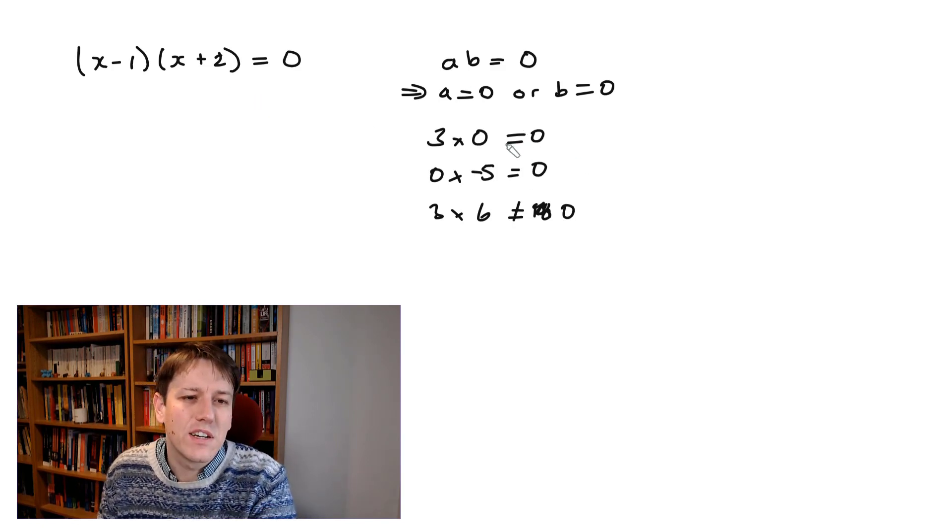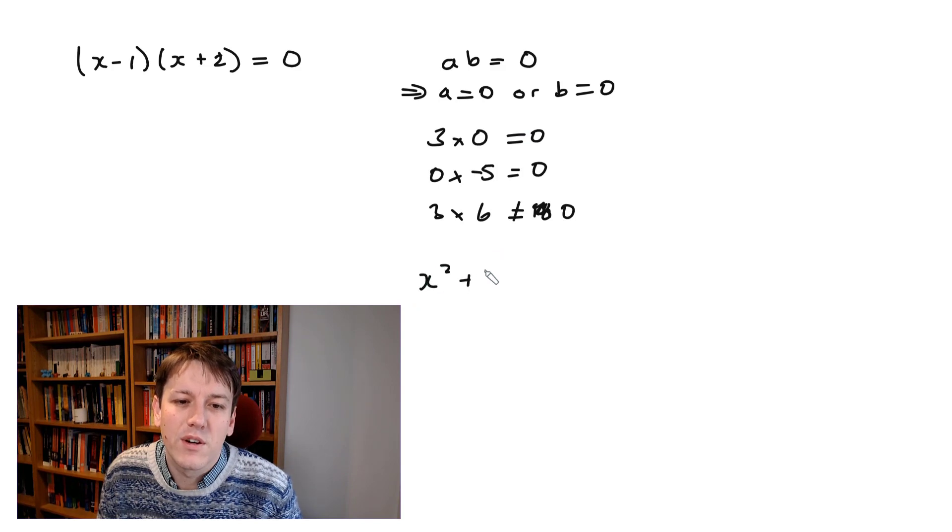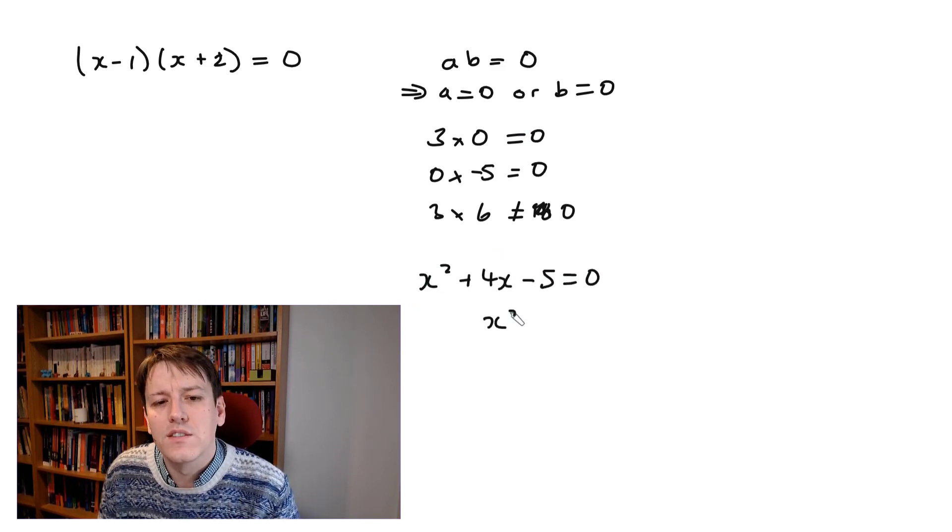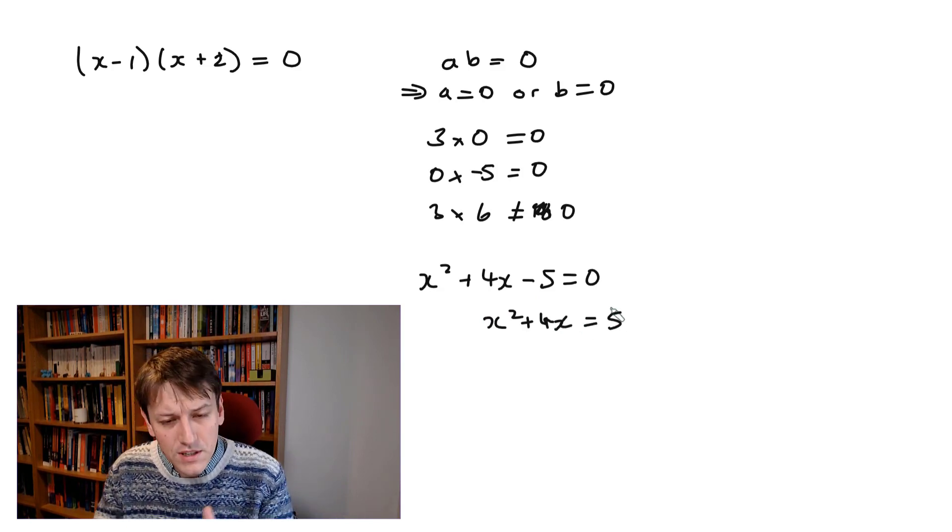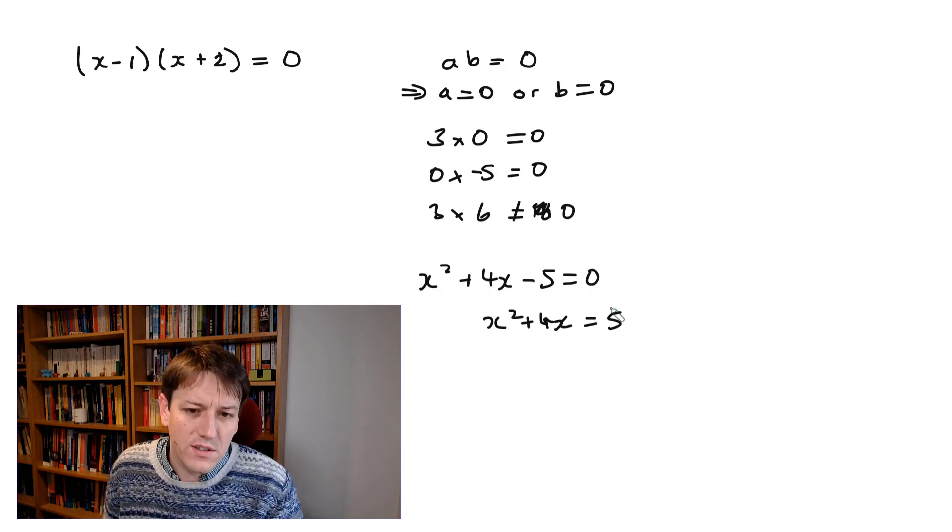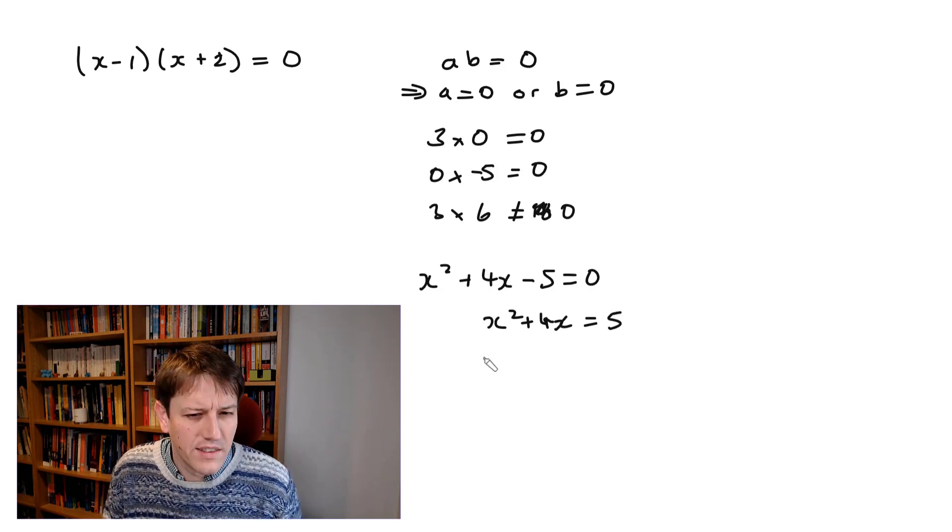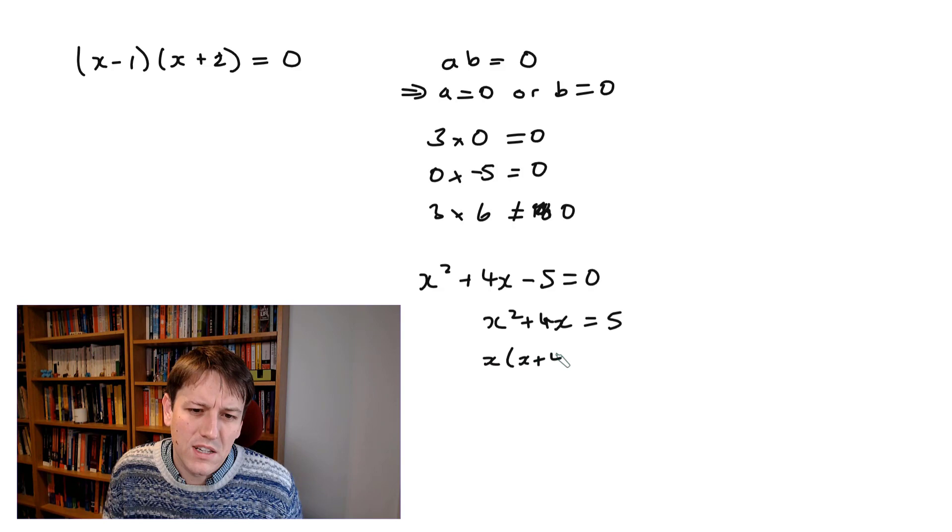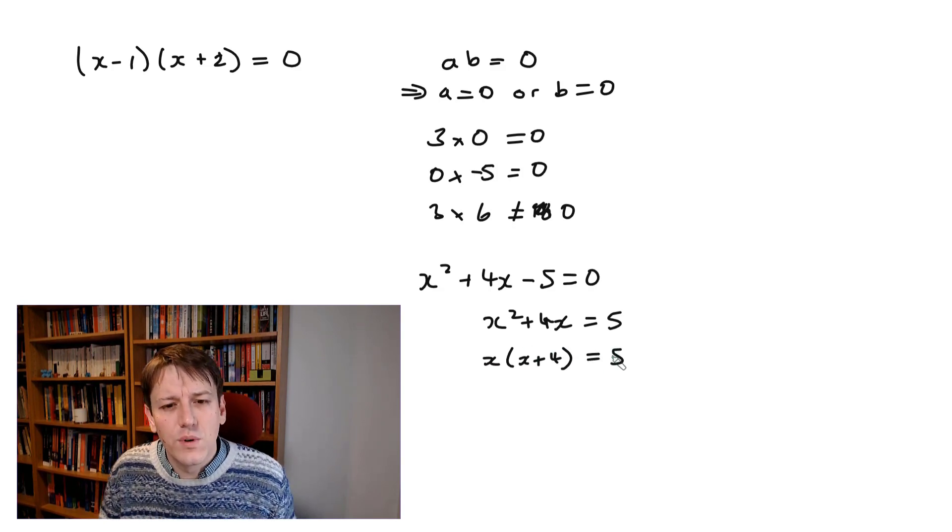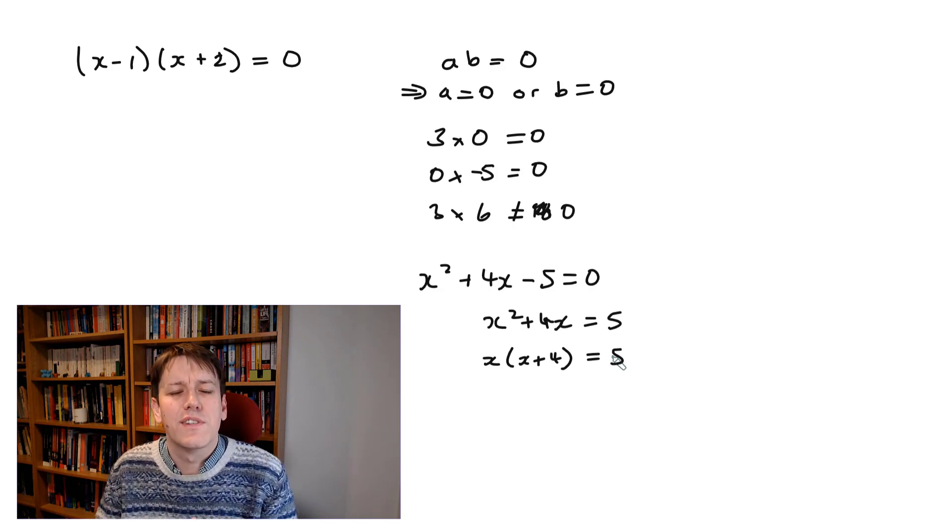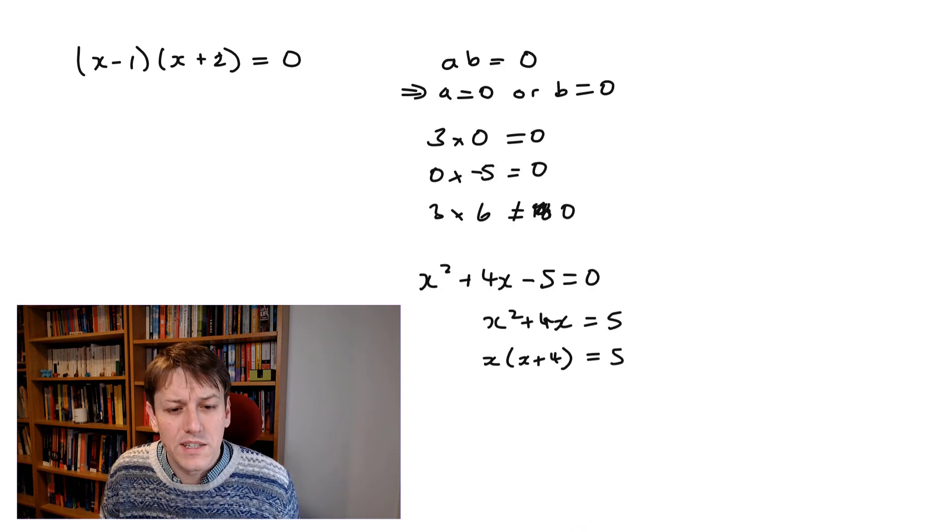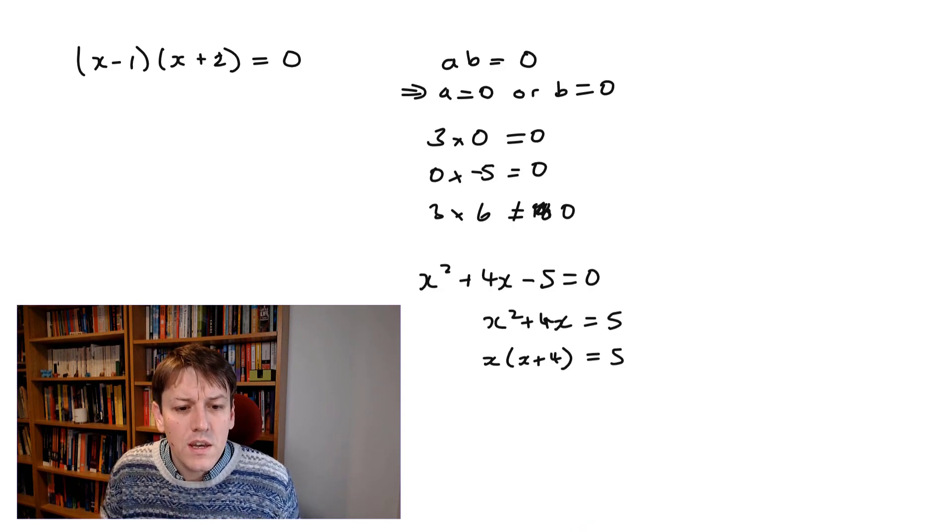So why does this matter? Well, it's the heart of this whole factorising method. This argument only works for 0. So you often see people start with an equation like x² + 4x - 5 = 0. And they do something like this, they say x² + 4x = 5. And I can see why you do that, because people have learnt to get all the x's on one side, all the numbers on the other side.